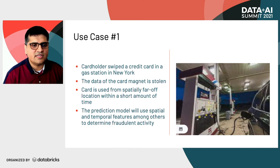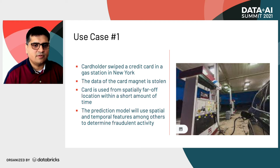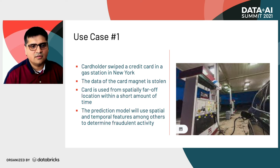The first use case: let's assume a cardholder uses his card at a gas station in a city, for example New York. The data inside the magnetic strip of the card gets stolen, and within a few minutes, the credit card gets used in different locations far away from New York City. This can be considered as one of the fraudulent activities — that's our first use case.